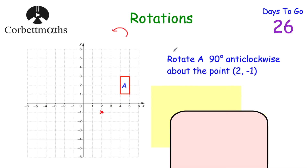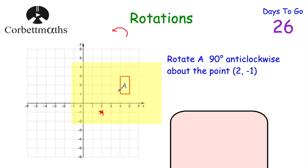Whenever I'm doing rotation questions, I like to use tracing paper, and you're allowed to have tracing paper in the exam — just put your hand up and ask for it. I'd put the tracing paper over the top of the shape, then mark the centre of rotation on it, and trace over the rectangle. When placing tracing paper down, make sure it's either landscape or portrait, because when we rotate at 90°, 180°, or 270°, we know where it should be.